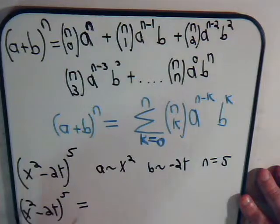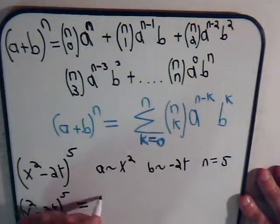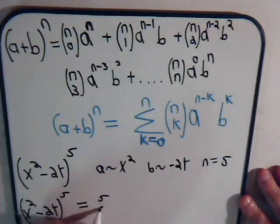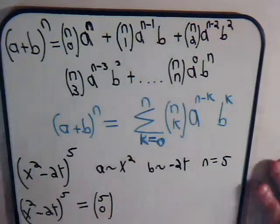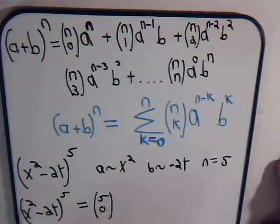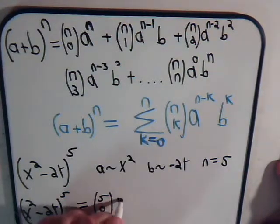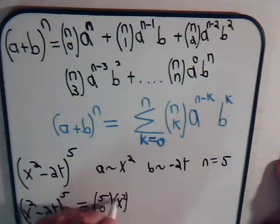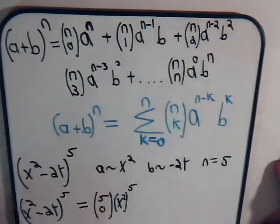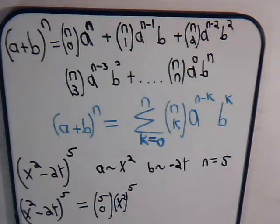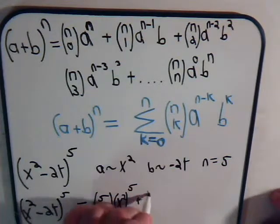So, here we have n is 5, k is 0, and now we're going to have the a term is this, x squared, to the fifth power. And the b term is raised to the zero power, so that's just one. Plus, we have this binomial coefficient.